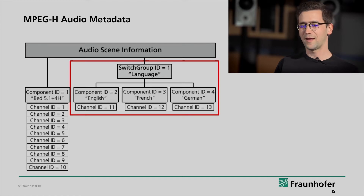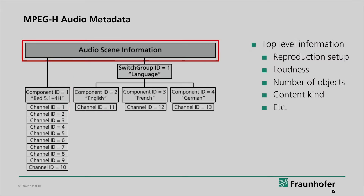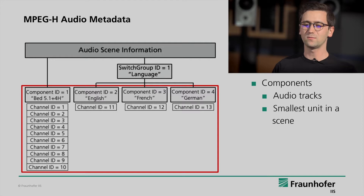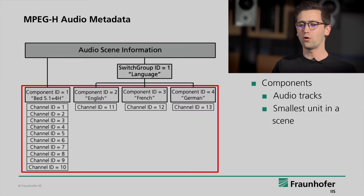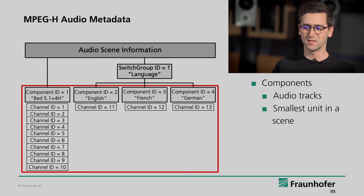So what do these labels mean? The Audio Scene Information includes all general information about our MPEG-H Scene, such as the reproduction setup, loudness values, number of objects, content kinds and so on. The Components are the smallest addressable unit in an MPEG-H Audio Scene, consisting of one or more channels. These channels can be combined to components forming our elements of an MPEG-H Scene.